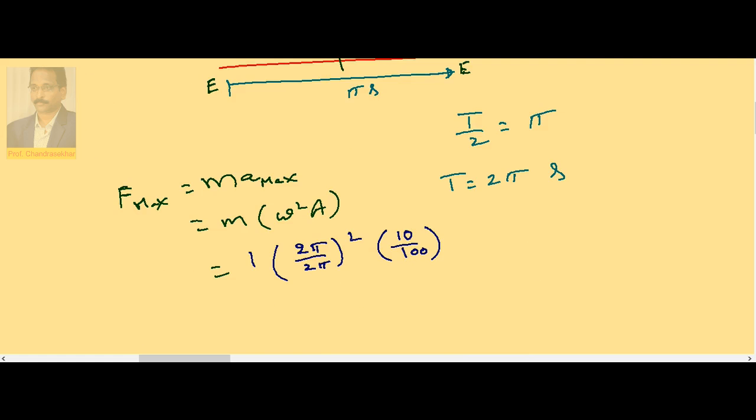2 pi and 2 pi gets cancelled. Therefore, the net value is equal to 10 by 100, which is 0.1. Force on the particle at the extreme position is 0.1.